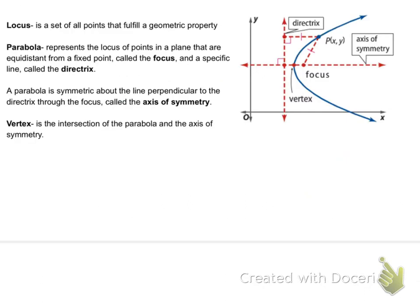So, let's go into the locus definition now. The locus definition for all of these is the fact that a locus is a set of points that fulfill a geometric property. So, each one of our conic sections has a different definition that uses a set of all points. Today, we're going to talk about the parabola. The parabola is the locus of points in a plane, flat surface, that are equidistant, equal distant, from a fixed point we call the focus, and a specific line on the outside back that we call the directrix.